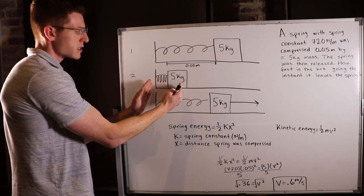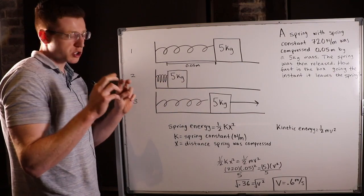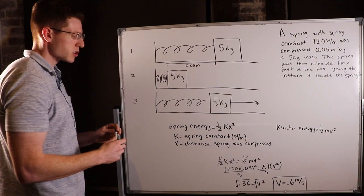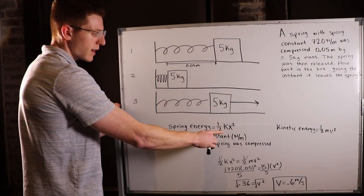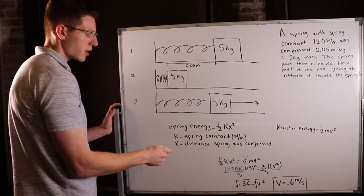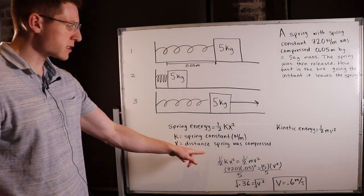There's no motion. We've completely compressed the spring and we've sort of charged up this energy in spring energy. And we know spring energy is one half kx squared, where k is the spring constant and x is the distance the spring was compressed.